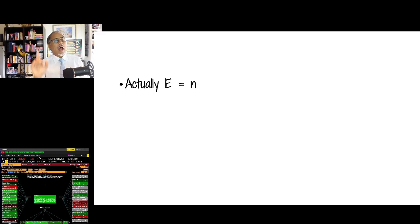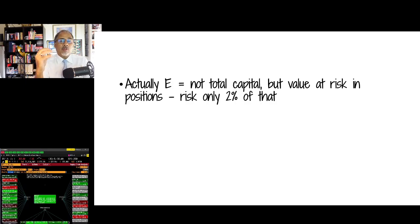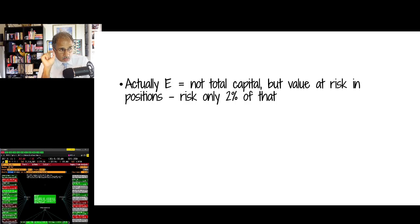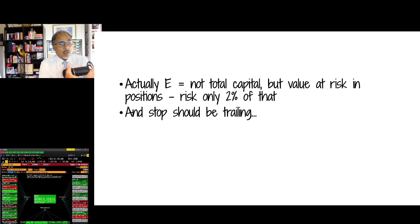Here's the advanced bit for those who want the degree in trading. E is not total capital — it should actually be your value at risk. Certainly in the hedge fund industry it is. Not all your capital, but actually how much is at risk from your entry points, across all your positions, to the stop loss. The risk should only be 2% of that. The advantage is that you're able to make more of your money without taking more risk. And of course, the stop loss should be trailing.